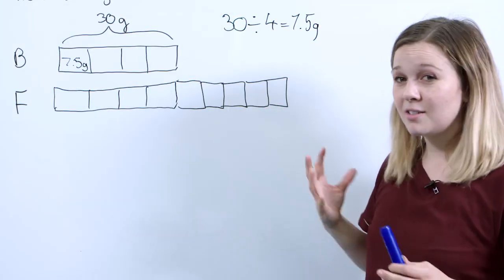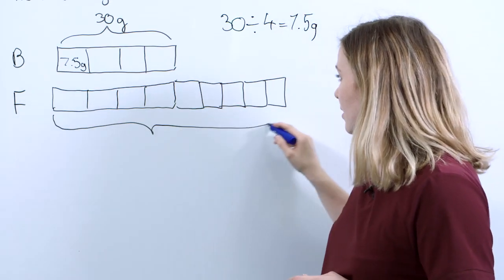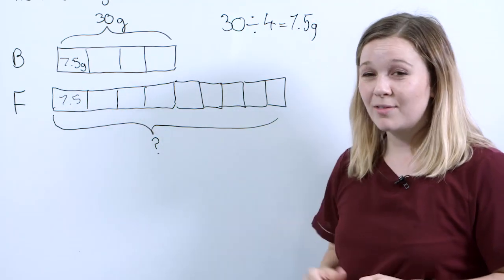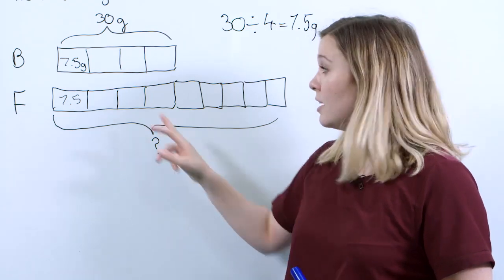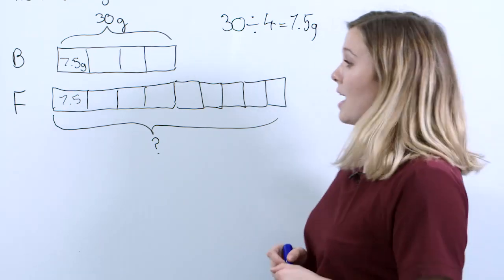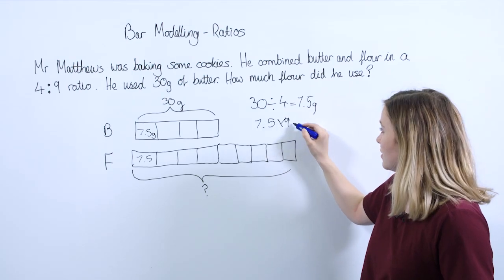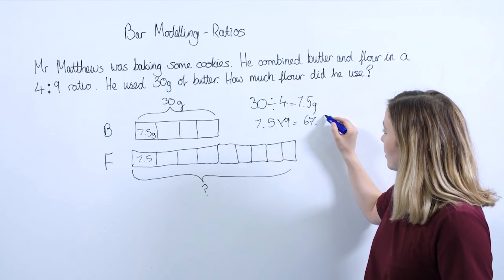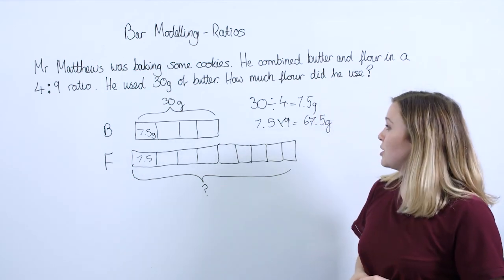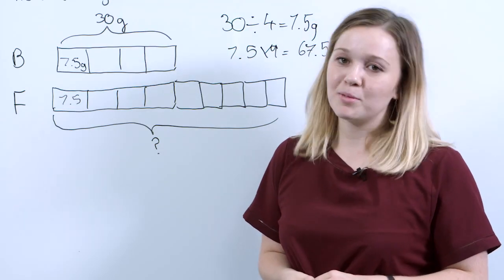We can see we're getting nearer to finding how much flour. We want to find out this unknown amount. Now we know that each part is 7.5 grams, so pupils simply need to multiply 7.5 by 9, because there are 9 equal parts. 7.5 times 9 gives us 67.5 grams. Mr. Matthews used 67.5 grams of flour — and that's how we can use bar modelling to help solve ratio problems.